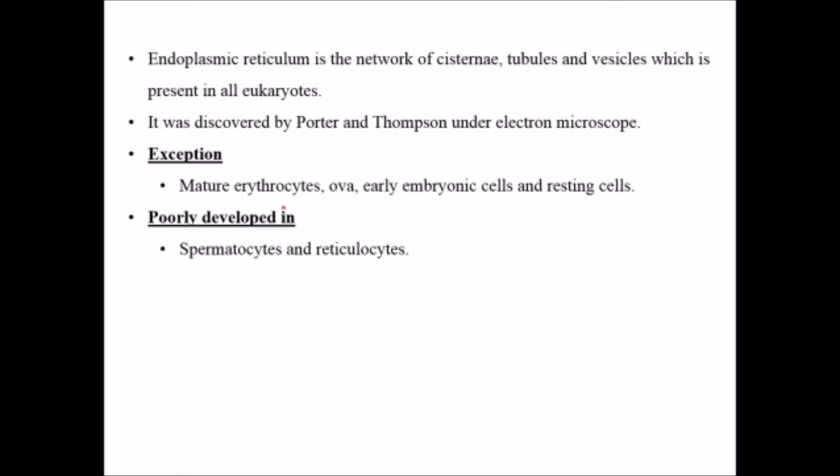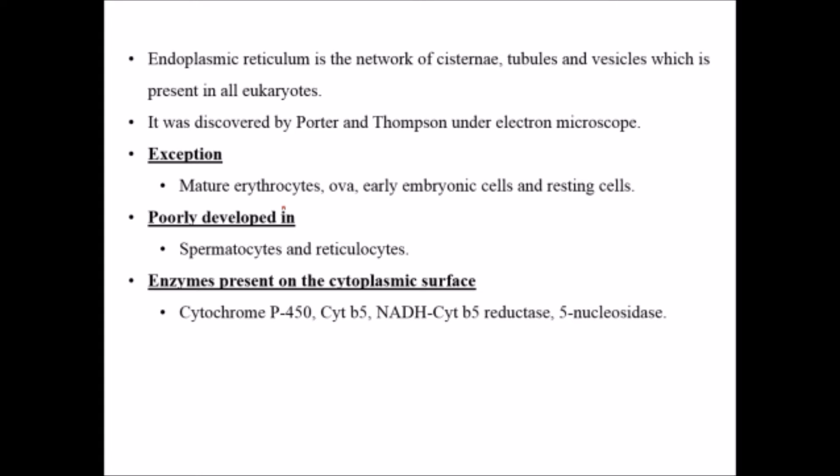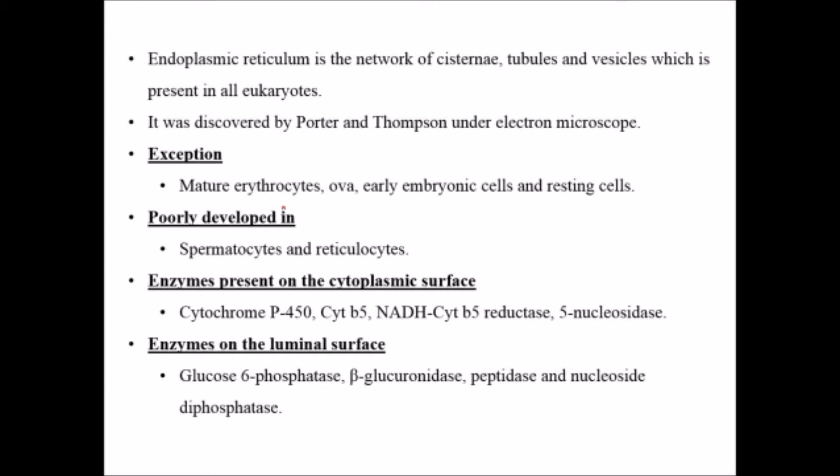ER is also poorly developed in spermatocytes and reticulocytes. There are certain enzymes present on the cytoplasmic surface of the endoplasmic reticulum, like cytochrome P450, B5, NADPH cytochrome B5 reductase, and 5-nucleosidase. These specific enzymes help in functioning during protein translocation and synthesis. On the luminal side, glucose-6-phosphatase, beta-glucuronidase, peptidase, and nucleoside diphosphatases are present, which help during glycosylation.